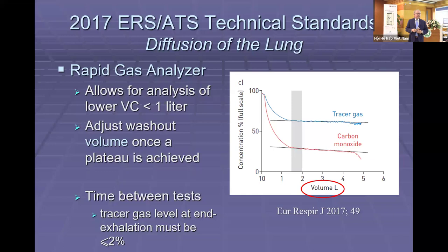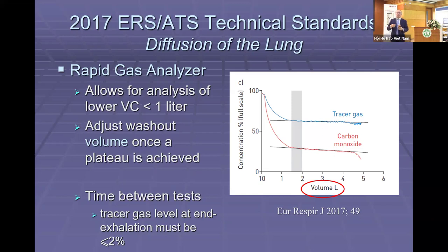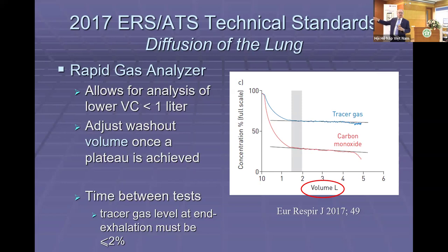In a classic system, the minimum washout volume for dead-space air was 500 milliliters, and the minimum sample analysis volume was also 500 milliliters — so it required at least 1.3 liters of vital capacity to even get a measurement. With the new rapid gas analyzers, it doesn't matter the volume of air as long as you can reach a plateau, so you can measure diffusion of the lung even in people with very low vital capacities.